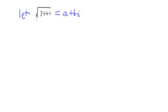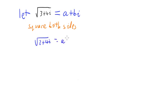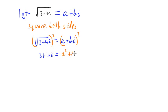This helps us because we can now square both sides, which will get rid of the square root. Squaring both sides, the square root squared leaves us with 3 plus 4i, which equals the expansion of a plus bi squared. Squaring that out we're going to have a squared plus 2abi take b squared. We expand that out using our algebraic expansion technique such as FOIL, and then we can equate the real parts and the imaginary parts.